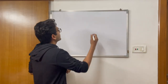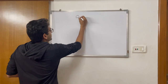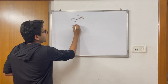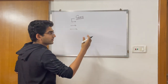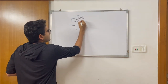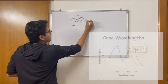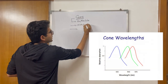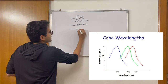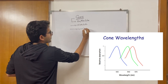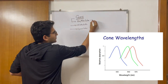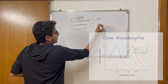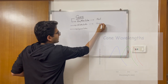Now let's talk about the structure of cones. Inside cones, there are three types of specialized proteins for different colors. First, erythrolabe. Second, chlorolabe. And lastly, we have the cyanolabe. Erythrolabe is responsible for detection of red light. Chlorolabe, obviously, for green. And cyanolabe is for blue.